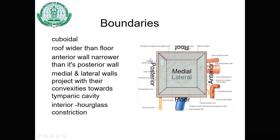Moving on to the boundaries of the middle ear cavity: it is roughly cuboidal in outline and presents six walls — the roof, floor, anterior wall, posterior wall, and the medial and lateral walls. The roof is wider than the floor, the anterior wall is narrower than the posterior wall, and the medial and lateral walls project with their convexities towards the tympanic cavity.